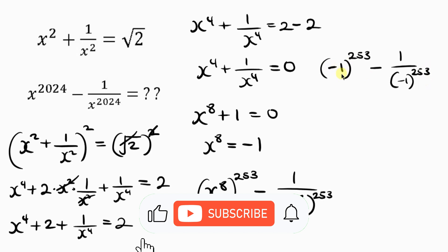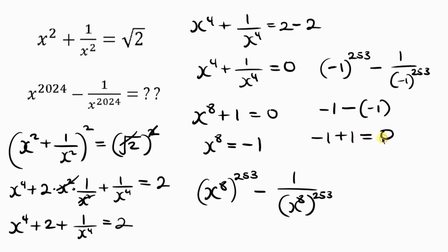Now negative 1 raised to power 253 I'll be having negative 1. I have the negative because the power is an odd number. Minus, I'm going to be having the same thing, 1 over negative 1 to the power of 253, which is negative 1. An inverse of negative 1 is still negative 1. So this gives us negative 1 plus 1 which gives us a final answer of 0. That means x to power 2024 minus the inverse of x to power 2024 is equal to 0.